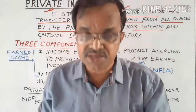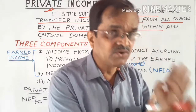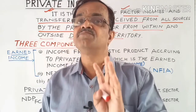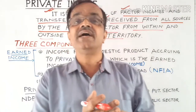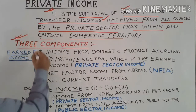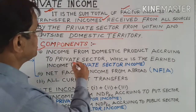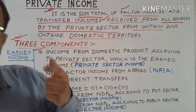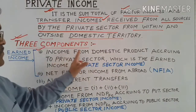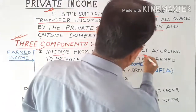Now the question arises: what are the components which are to be added together to get private income? There are three components. Number one, the first component is private sector income, written in questions as 'income from domestic product,' meaning NDP at FC (Net Domestic Product at Factor Cost).